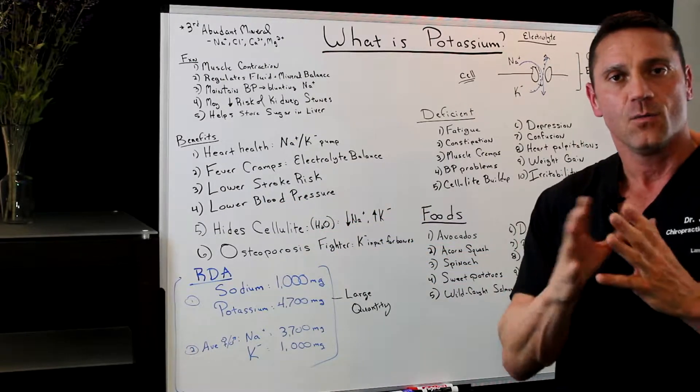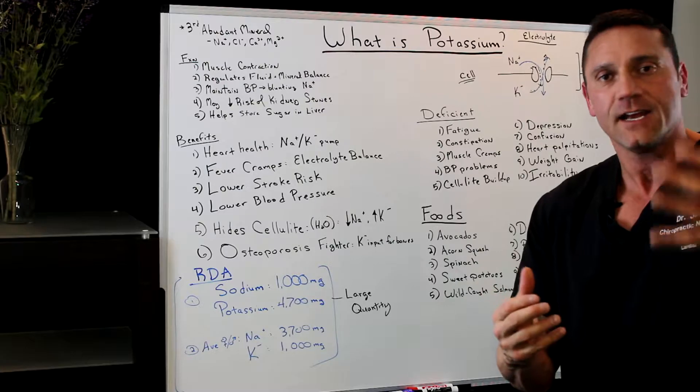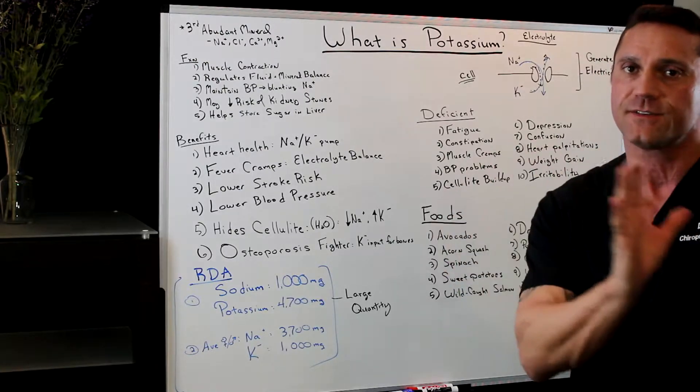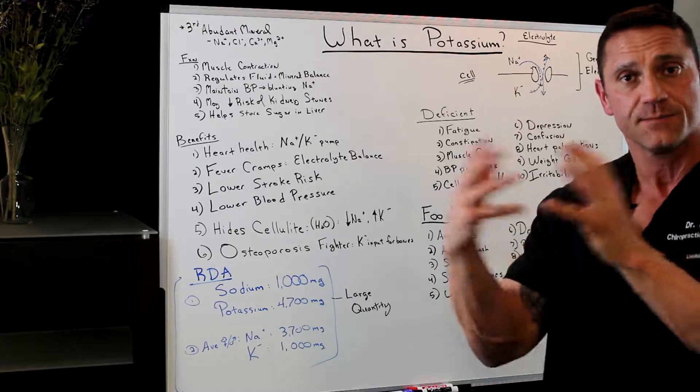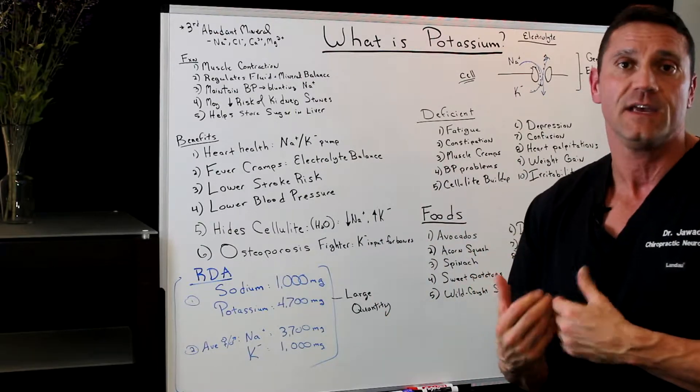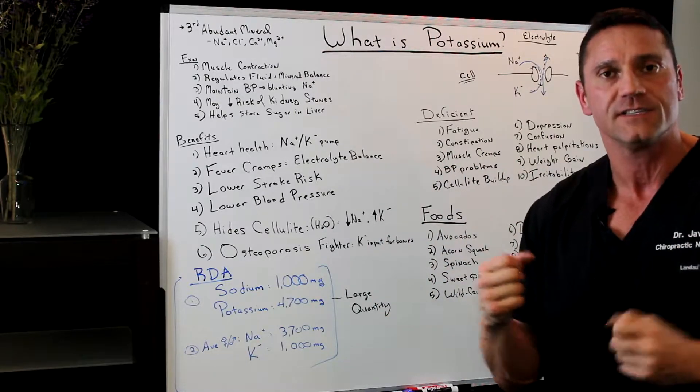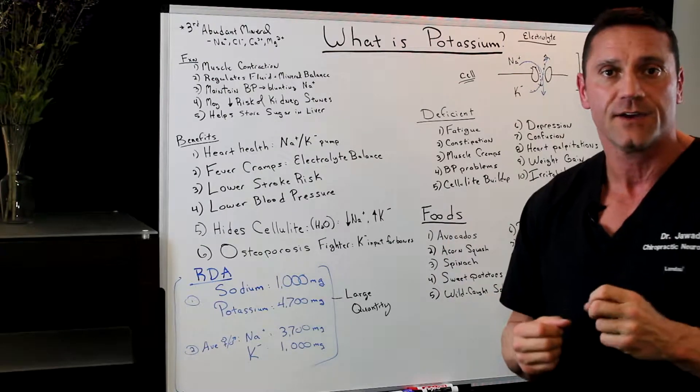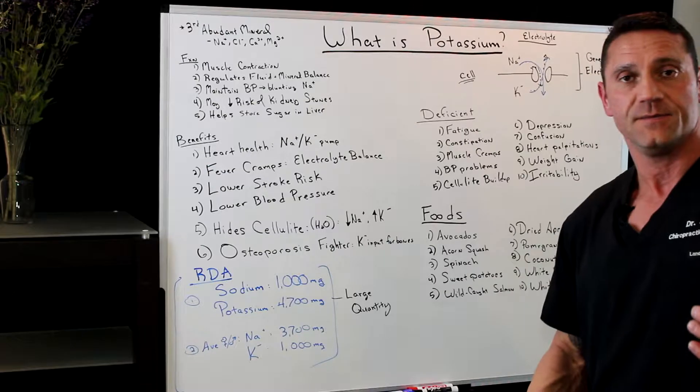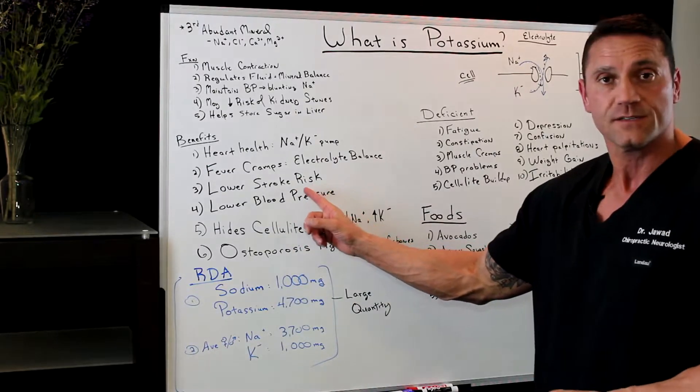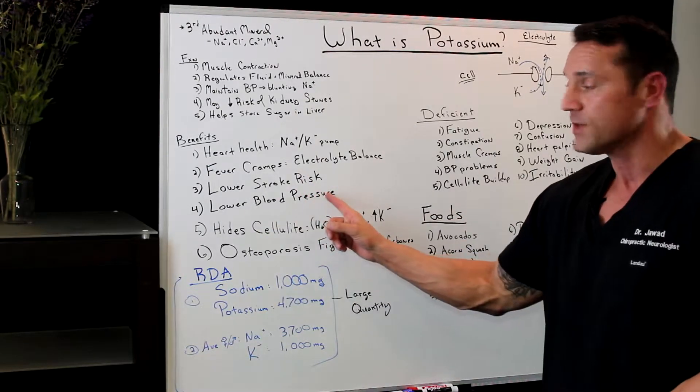With the sodium-potassium pump, when there's too much sodium in the body, it retains water. Your body is going to retain water. It's going to make the blood thicker, which actually is going to increase the peripheral resistance throughout your system. So your heart, the left ventricle, is actually going to pump harder. So increasing the potassium is going to help lower the stroke risk and help lower blood pressure.